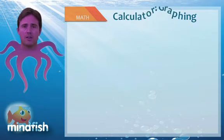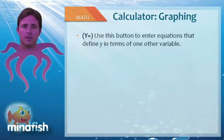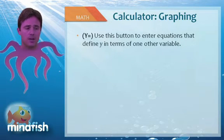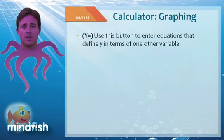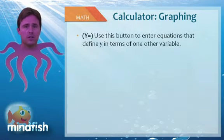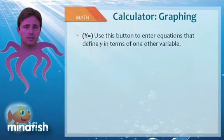First, let's talk about graphing. There are basically four main buttons you want to be familiar with to use your graphing calculator for graphing problems. The first is the Y= button. This button is used to enter equations that define y in terms of another variable. You can enter multiple equations here, but make sure you always have the equation in terms of y and watch out to use proper parentheses so that the order of operations is done correctly.